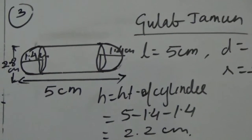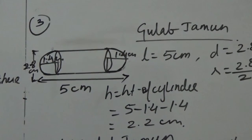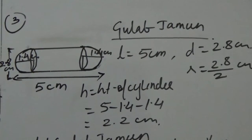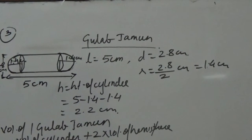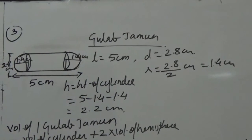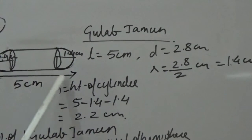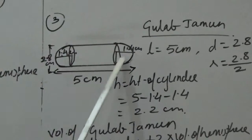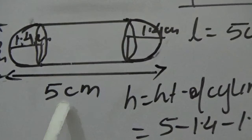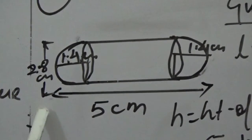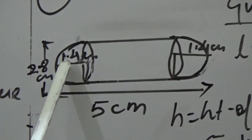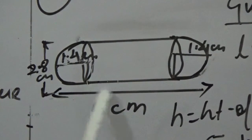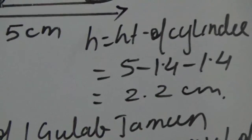In question 3, a gulab jamun contains sugar syrup up to about 30% of its volume. We need to find how much syrup is in 45 gulab jamuns. Each gulab jamun is shaped like a cylinder with 2 hemispherical ends, with total length 5 cm and diameter 2.8 cm, giving radius 1.4 cm. Height of cylinder = 5 − 1.4 − 1.4 = 2.2 cm.